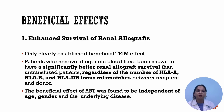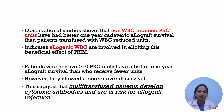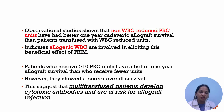The first beneficial effect is enhanced survival of renal allograft — this is the only clearly established beneficial TRIM effect. Patients who receive allogeneic blood transfusion have significantly better renal allograft survival than untransfused patients, regardless of the number of HLA-B or DR locus mismatches, and this benefit was found to be independent of age, gender, and the underlying disease. Observational studies showed that non-WBC-reduced RBC units have a better outcome than WBC-reduced units, indicating allogeneic WBCs are involved in eliciting this beneficial TRIM effect. Some studies showed that patients who received more than 10 RBC units have better 1-year allograft survival, but these patients showed poor overall survival, suggesting multi-transfused patients develop cytotoxic antibodies and are at risk for allograft rejection.